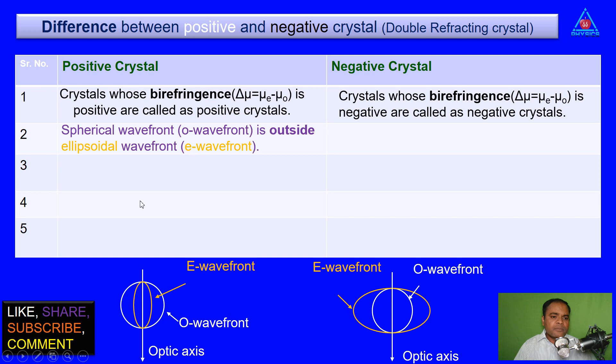Second point, spherical wavefront, that is O-wavefront, is outside ellipsoidal wavefront in positive crystal. In negative crystal, spherical wavefront, that is O-wavefront, is inside ellipsoidal wavefront.